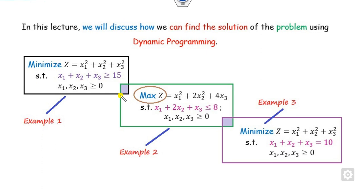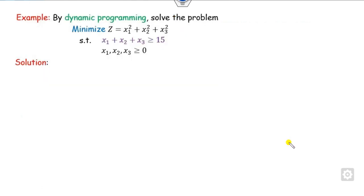The objective of this lecture is to see how we can solve problems where the constraints are either greater than (example 1), less than (example 2), or equality. We will consider minimization and maximization problems. We will follow the same rule discussed in example number 1, which you can apply to each of the problems.